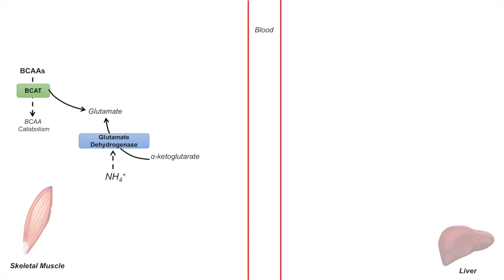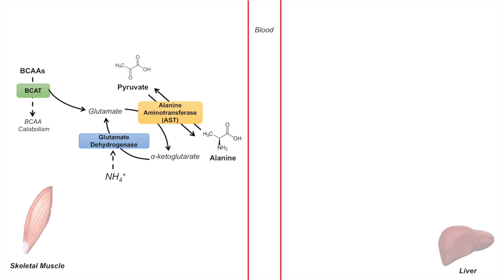The glutamate can then donate its amino group to pyruvate to form alanine, with the enzyme alanine aminotransferase. This enzyme requires pyridoxal phosphate, which is a vitamin B6 derivative. Alanine aminotransferase takes the amino group from glutamate and adds it to pyruvate to form alanine. In the process, the glutamate is recycled back into alpha-ketoglutarate.